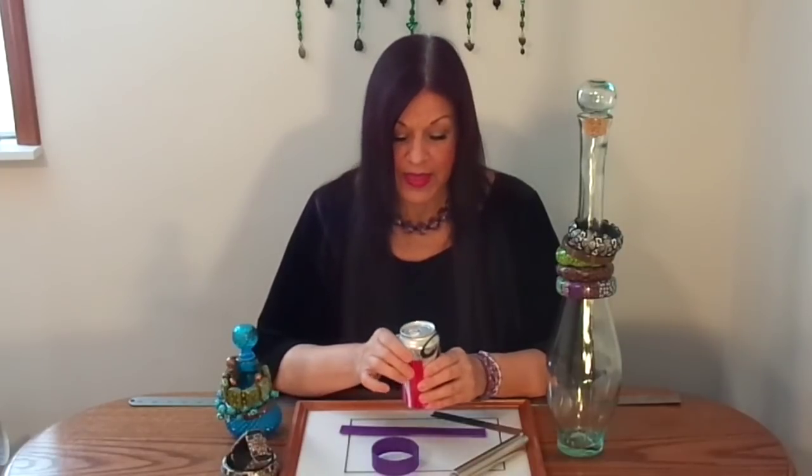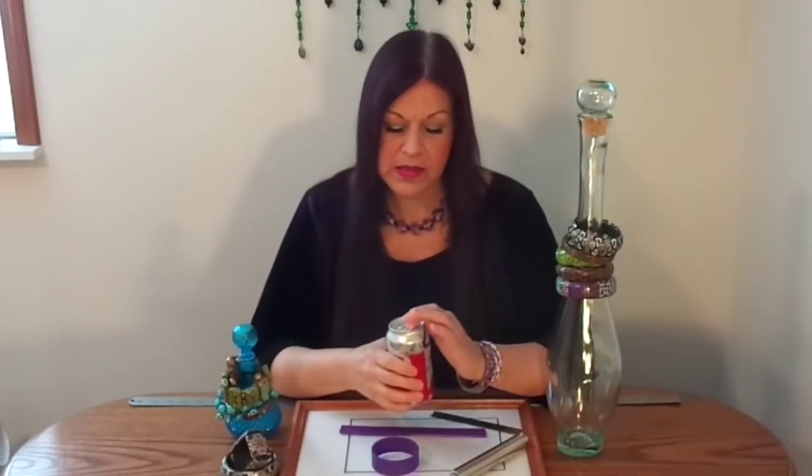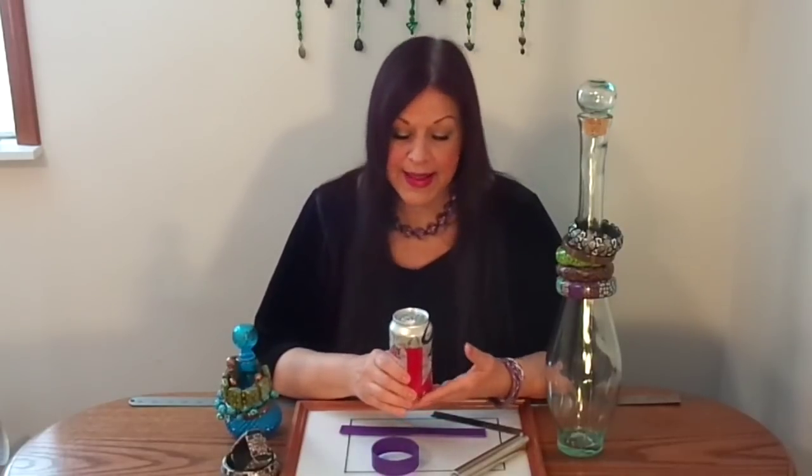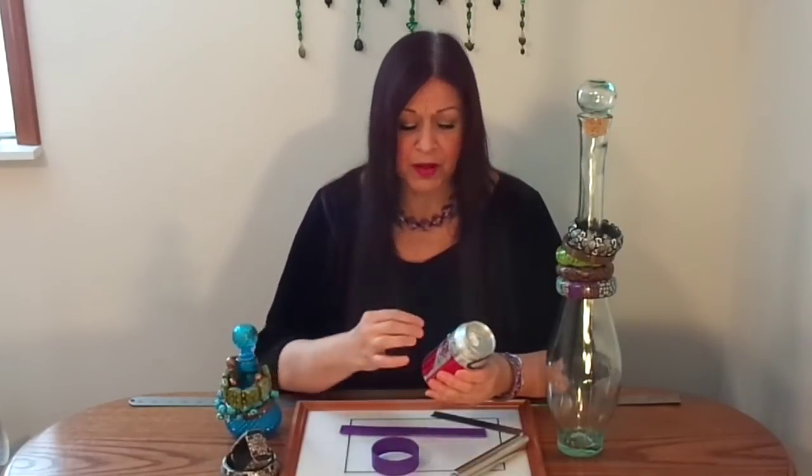What you do to your soda pop can to make life easier for yourself is you fill it full of rice all the way to the top until there's just a little bit of space left. And then you stuff in a paper towel. I use a butter knife because I pack it really tight so it won't spill out. And I stick the paper towel in there to hold the rice in.